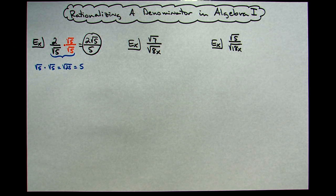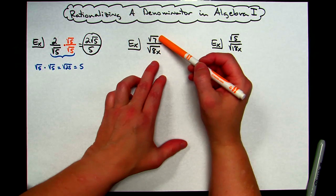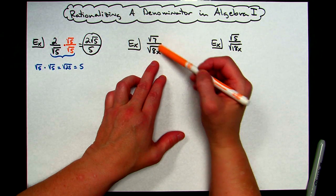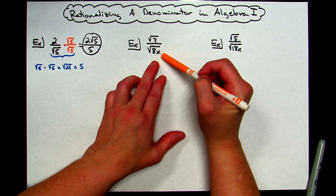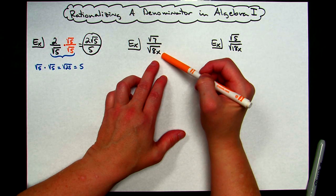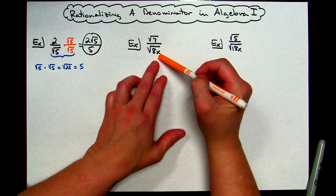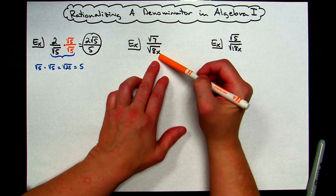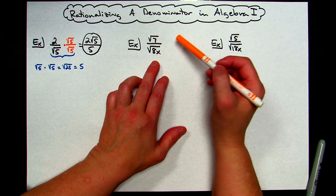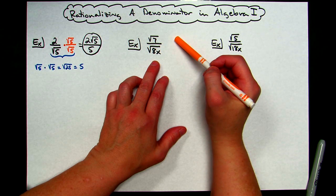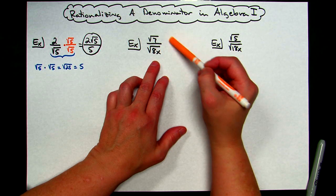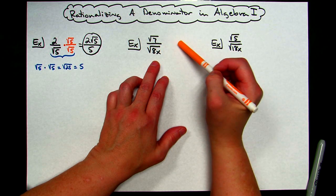For our second example, we've got square root of 7 over the square root of 8x. Now I could again choose to multiply by square root of 8x over square root of 8x. Although when I do that, 8 times 7 on the top is going to give me a 56. If you choose to do that, you're going to have more work because if that numerator can be simplified with that radical, you would need to do it.